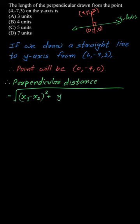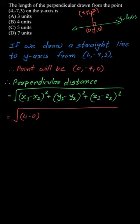The distance formula is √[(x₁-x₂)² + (y₁-y₂)² + (z₁-z₂)²]. If we assume (x₁, y₁, z₁) as the given point (4, -7, 3) and (x₂, y₂, z₂) as (0, -7, 0), then on simplifying we get √25.